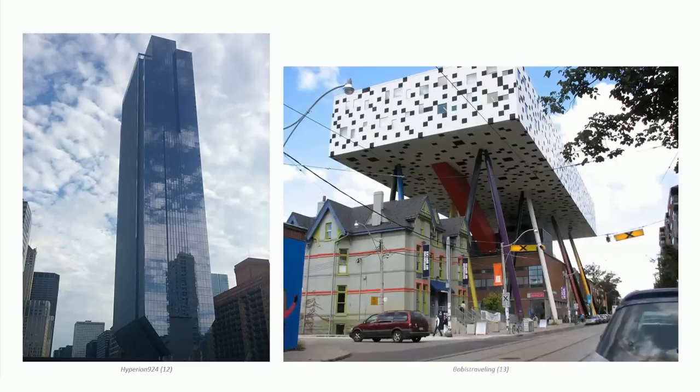A little closer to home, we have the Ontario College of Art and Design, with its own unique foundational design — though this one is for aesthetic reasons. Regardless, the construction of the two buildings encountered a similar challenge: the foundation was smaller than the building itself. We encounter a similar situation with the human knee, where the larger femur rests on the smaller tibia. Just as architects had to address this foundational issue, the knee is designed to resolve this structurally unstable situation. This is the focus of this next session.